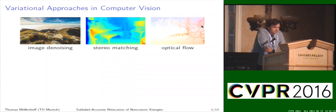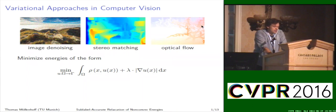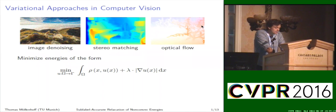Many variational approaches in computer vision, such as image denoising, stereo matching, or optical flow, can be solved by minimizing energies of the following form, where we minimize the sum of a point-wise data term plus a regularizer, which is here the total variation. For the example of stereo matching, one would seek the minimizer of functions u, which map from the image domain omega to the set of disparities gamma. The data term rho would encode the matching cost between the two images, given the pixel x in the image and the disparity u of x.